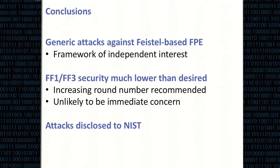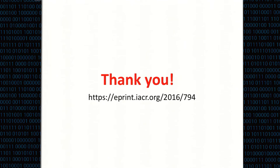To conclude, we show generic attacks against unbalanced Feistel networks and analyze them in a framework we believe is of independent theoretical interest. The most important message is the application to the NIST standard constructions: with 8 and 10 rounds on small domains, these constructions become completely insecure against our attacks. We suggest that at the very least the round numbers should be increased, especially for small domains. We have disclosed the attacks to NIST. The paper is on ePrint with more details.